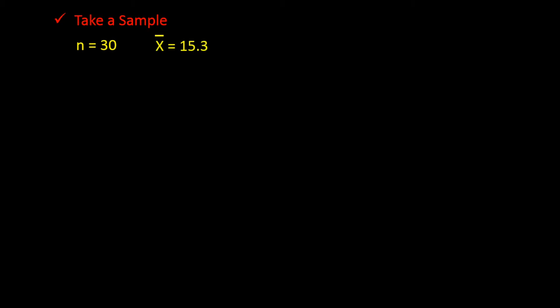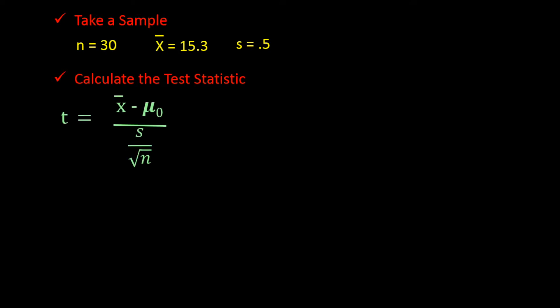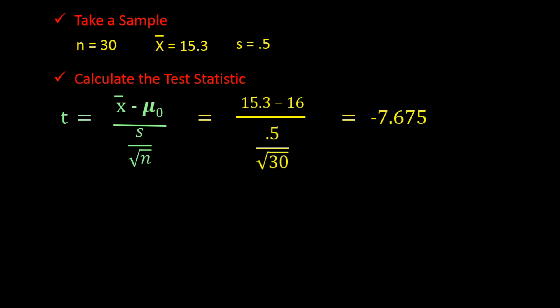So we take a sample of 30 cereal boxes, measure them, and calculate a sample mean of 15.3 ounces with a sample standard deviation of 0.5 ounces. The test statistic is a t-test instead of a z-test since sigma is unknown. T is equal to x-bar minus the hypothesized value of the mean divided by s over the square root of n, which is 15.3 minus 16 divided by 0.5 divided by the square root of 30, and that equals negative 7.675.